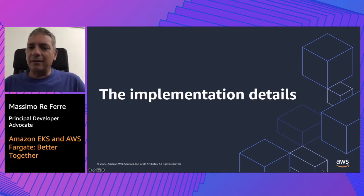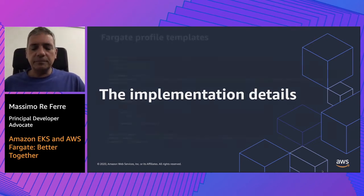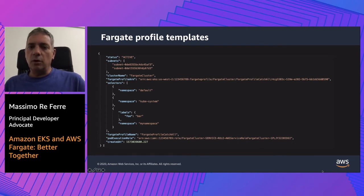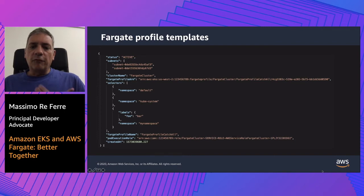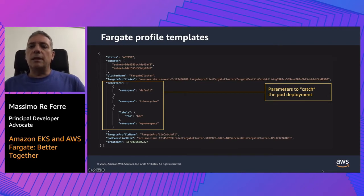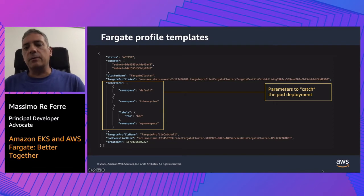Let's get into some more technical implementation details about how we made this work. You may be wondering how you can tweak Kubernetes to deploy to something that doesn't actually exist. To do this, we introduced the notion of Fargate profile templates in the EKS service. This is a new API you can use to create and delete Fargate profiles. The Fargate profiles tell EKS a few things. The most important is what we call pod selectors — a combination of namespace and labels that allows EKS to catch the pod deployment. When there is a match, EKS knows it needs to deploy to Fargate instead of standard EC2 instances.